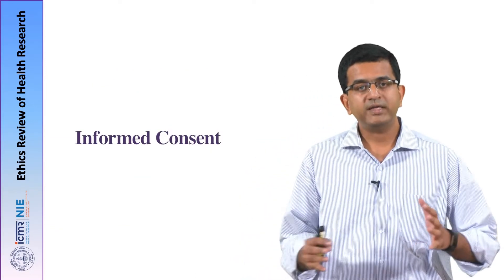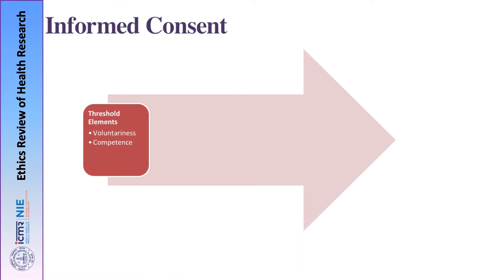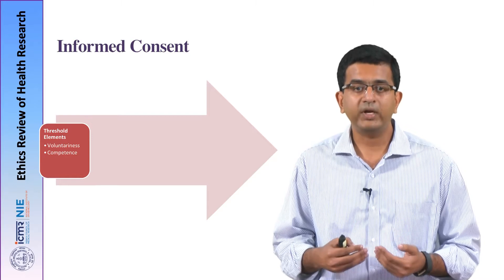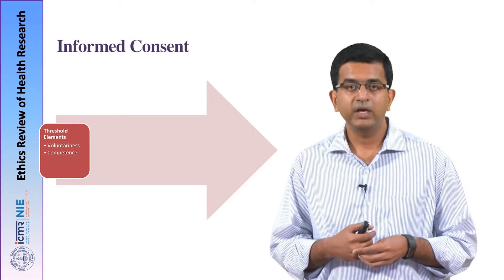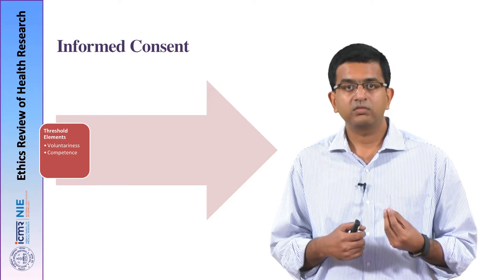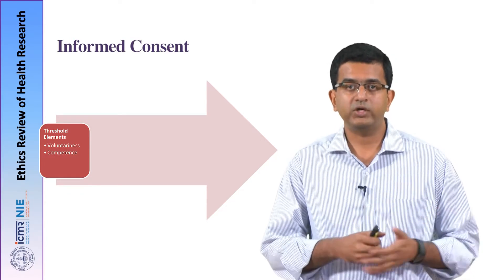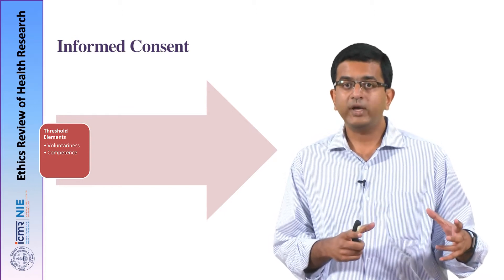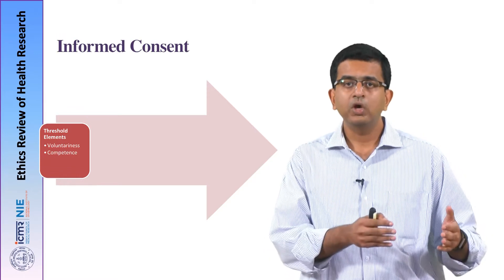Now let us look at the various elements that are part of the informed consent process. First are threshold elements — elements which must be met before we initiate the process. The first threshold element is competence: the ability of the research participant to understand, consider various aspects, and make an informed decision about participating. The other important threshold element is voluntariness — there should be no undue pressure, no external influences, and no coercion operating while the participant is entering the study.